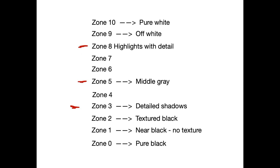Zone three is our shadows — that is where when we look into the shadows of our scene we can see good detail in those shadows. They should be in zone three. Zone five is middle gray, and there are lots of middle grays when we go out photographing. For instance, green grass is pretty much zone five middle gray. So if you need a middle gray meter reading, you can point your spot meter at some grass lit by the same light as your subject and you know you're getting a zone five reading.